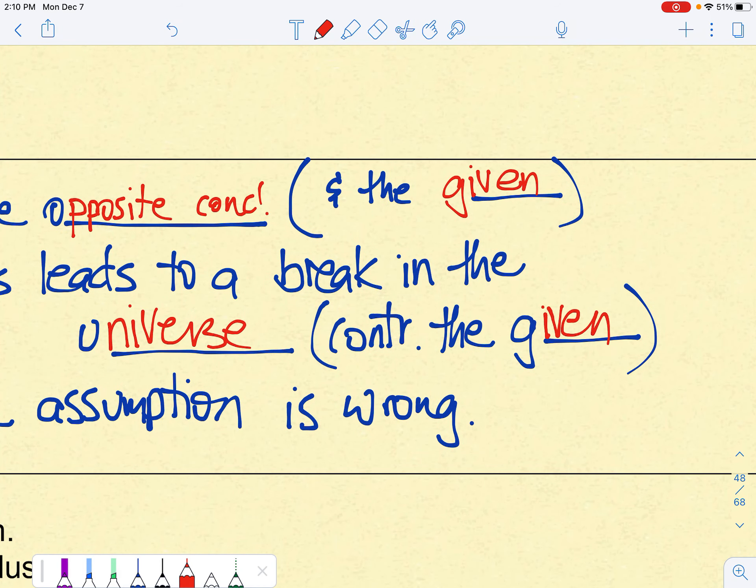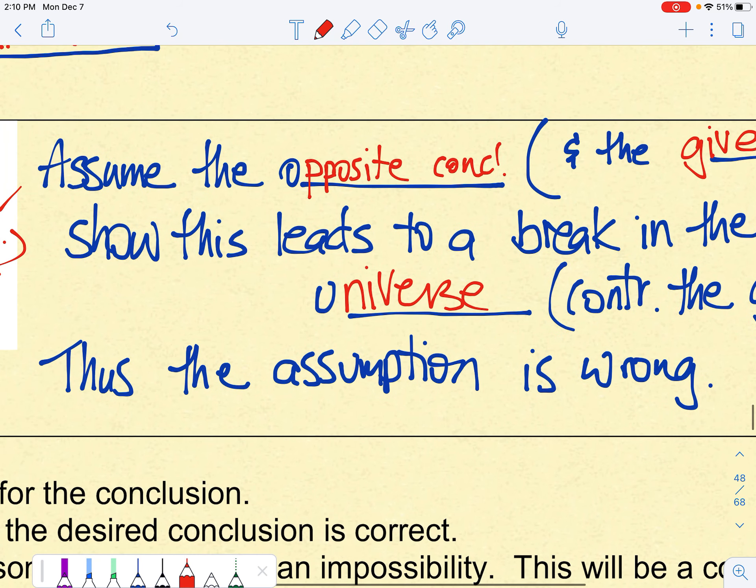Specifically, it contradicts the given, or it contradicts some well-known rule. Now, what we would then arrive at is, since we have a contradiction, our assumption must be wrong.